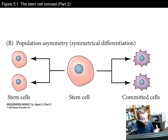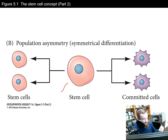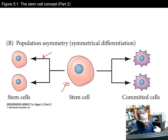In addition to single cell asymmetry, you can have population asymmetry or symmetrical differentiation. This is where a single stem cell divides, and the product of that division — the two daughter cells — can either divide to produce two stem cells, so both daughter cells become stem cells, or they can divide and produce two committed cells, a cell that's going to become a specific tissue type.